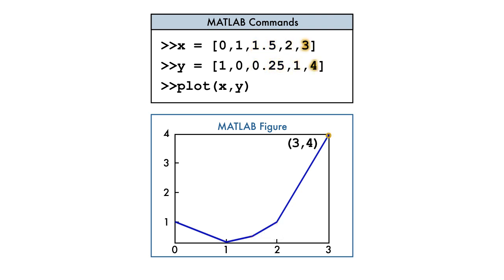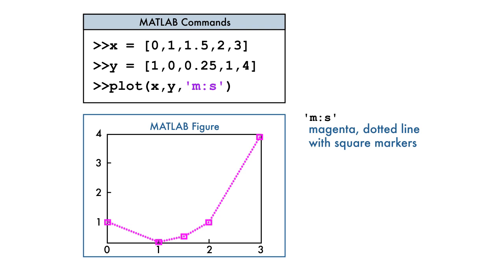We can add markers to the points by using a third input to the plot function. The third input contains characters surrounded by single quotation marks that specify the format of the graph. In this particular example, the line will be a magenta dotted line with square markers.